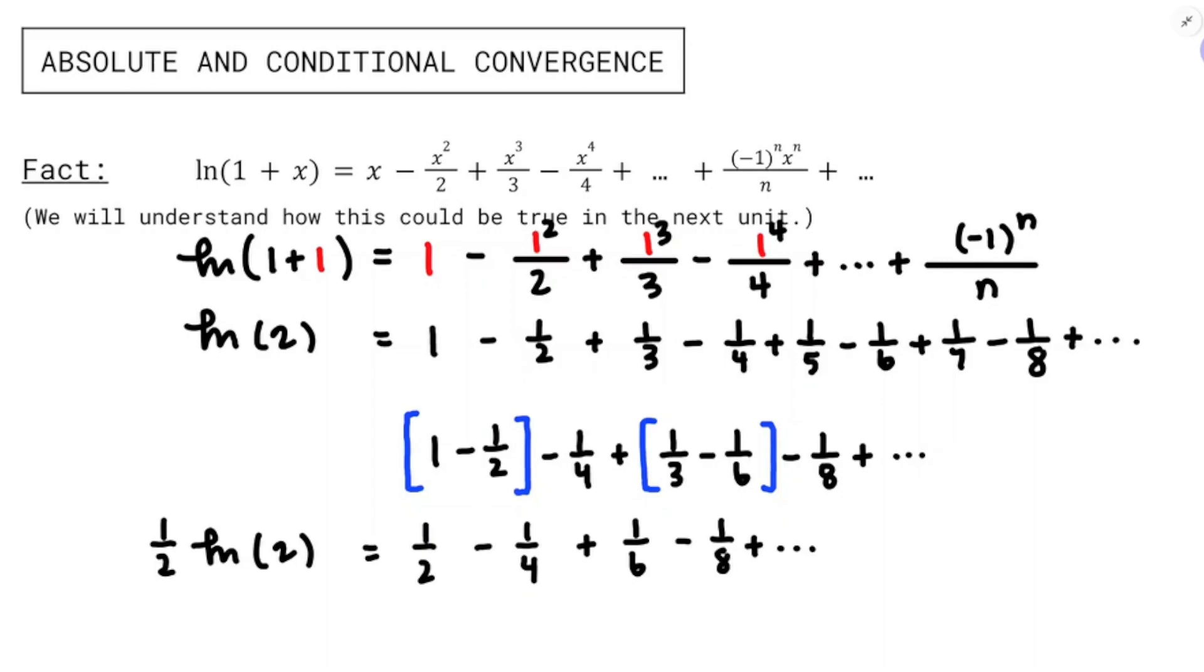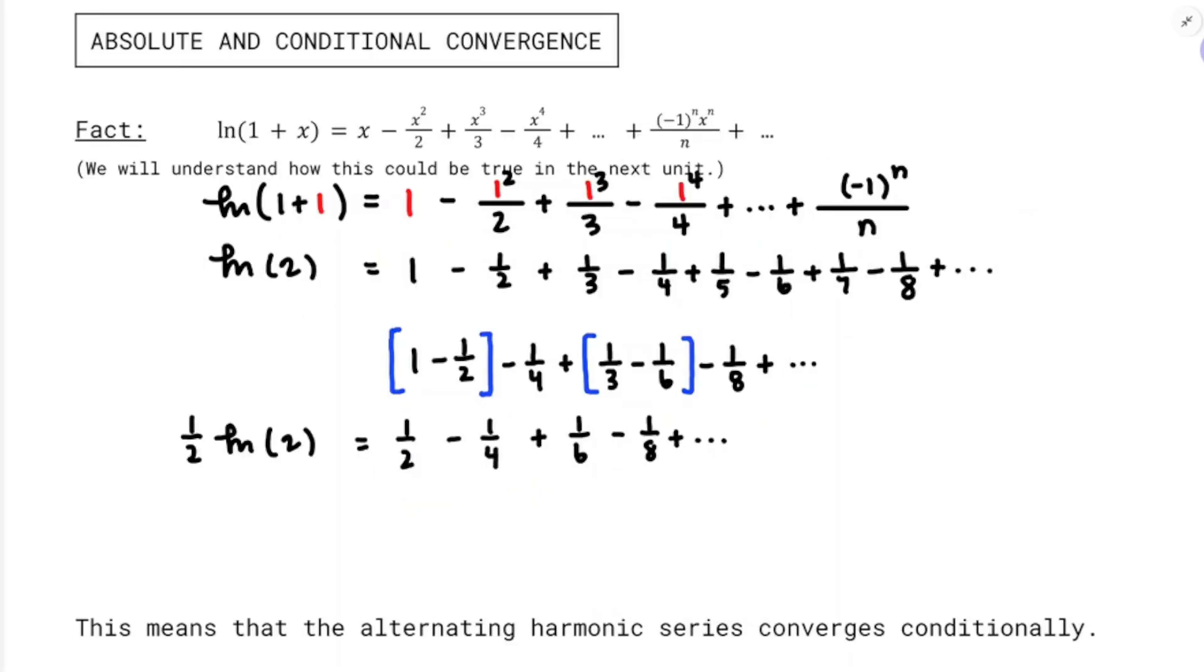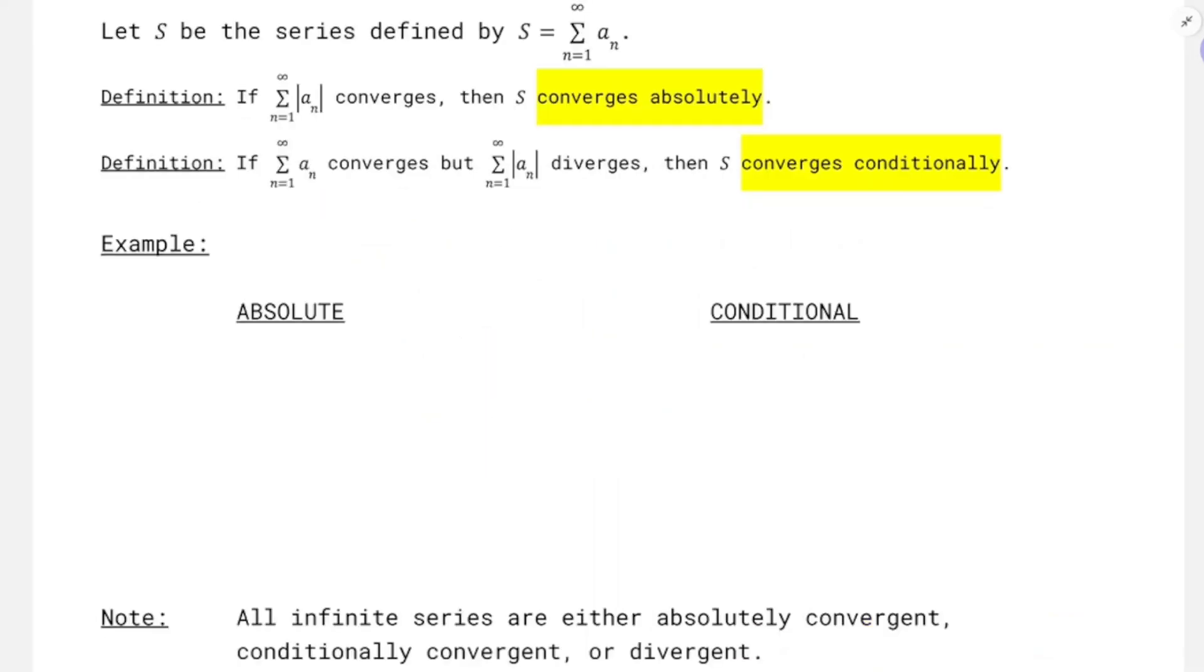So what we're seeing here is the idea of conditional convergence. The value to which this alternating harmonic series converges is conditioned upon the ordering of the terms. And the idea is called conditional convergence, and this means that the alternating harmonic series converges conditionally. The regular harmonic series still diverges, but this one converges conditionally by the alternating series test.